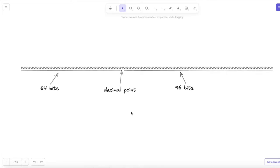So in binary form, without any values in it, it would look like this. The decimal is right here, and there are 64 digits on the left side and 96 digits on the right side for storing ones and zeros. This is binary after all.